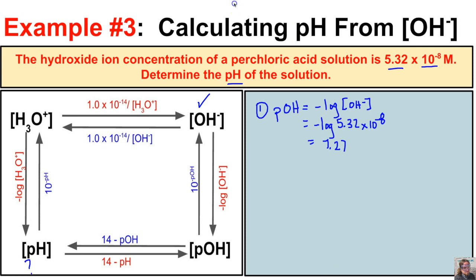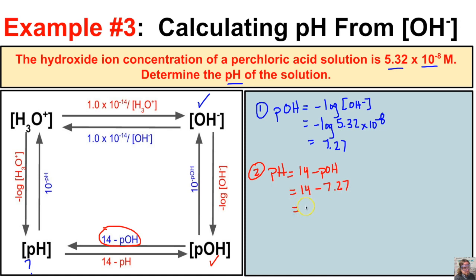This is not the final answer. In the second step, we find the pH by taking 14 minus the pOH: 14 − 7.27 = 6.73. So a perchloric acid solution with a hydroxide ion concentration of 5.32×10⁻⁸ moles per liter has a pH of 6.73.